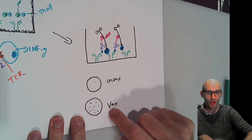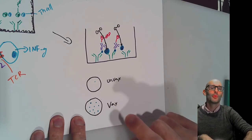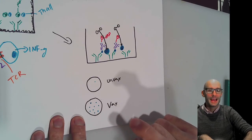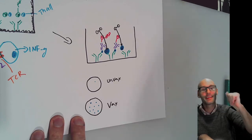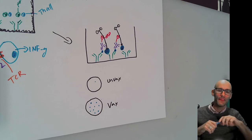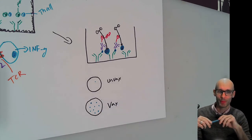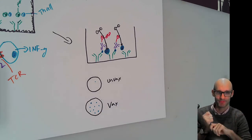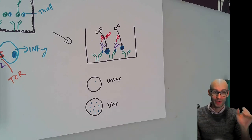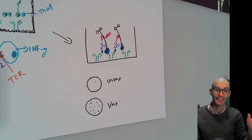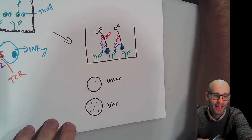So we end up with lots of dots, which represent interferon gamma-producing T cells — T helper cells that had a T cell receptor that recognised the antigen we put in, which was the spike protein. We can see that the vaccinated person has T cells that recognised the spike protein, so vaccination worked. That's your ELISpot!